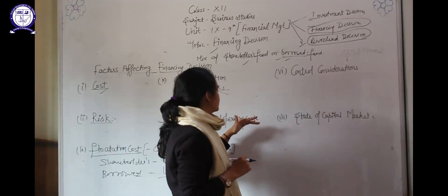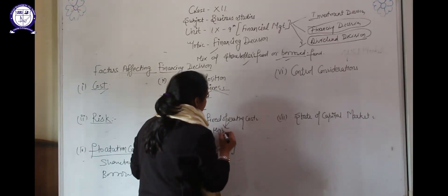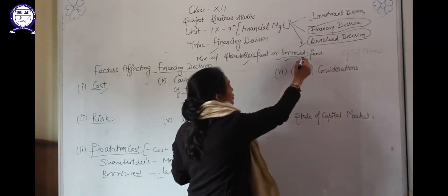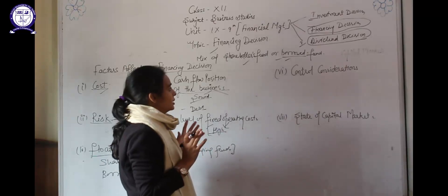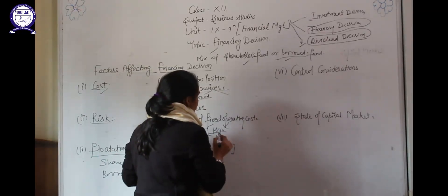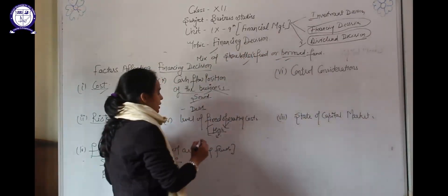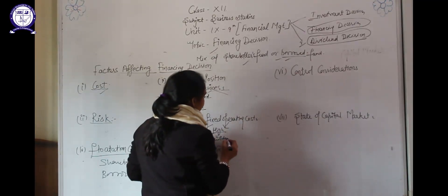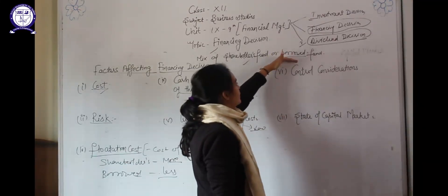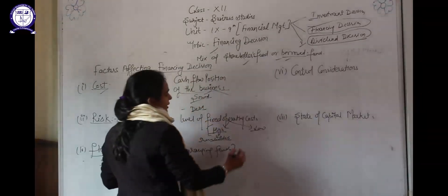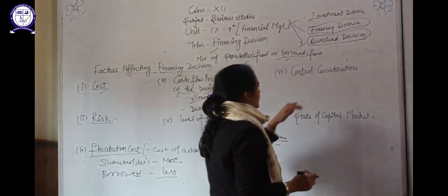Level of fixed operating cost — the cost to run the business, like rent, wages, and salary. If the fixed operating cost is already high, and the company uses borrowed funds, the fixed burden on the company will increase because the company has to pay interest timely. At that time the company should avoid borrowed funds and use shareholder funds instead. If the company's fixed operating cost is low, then the company can bear the fixed burden of borrowed funds.